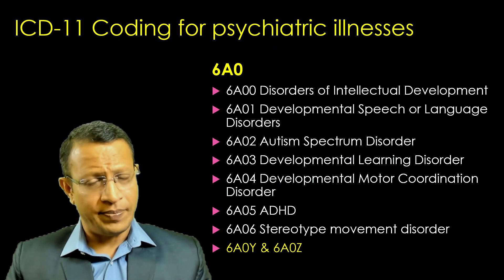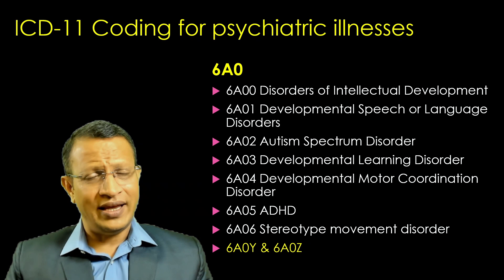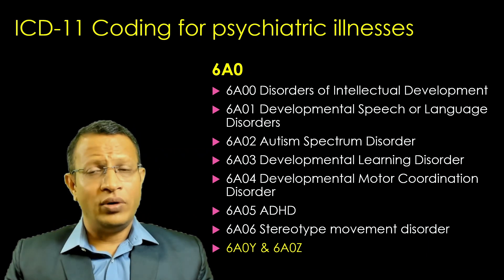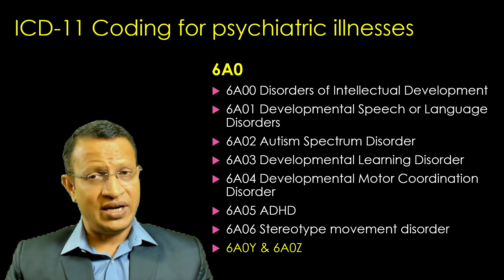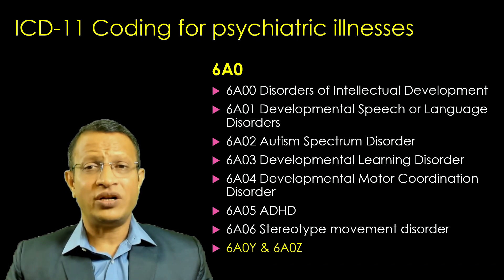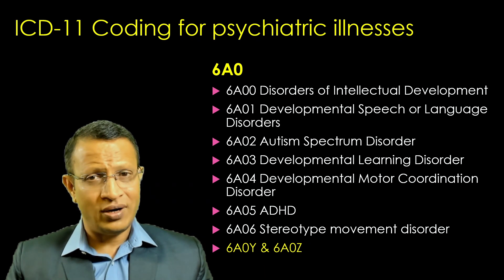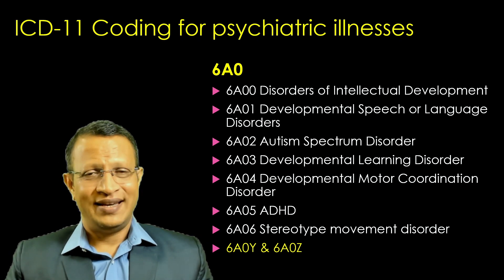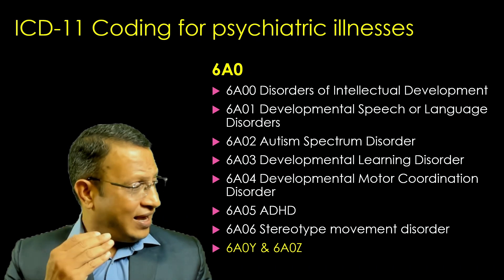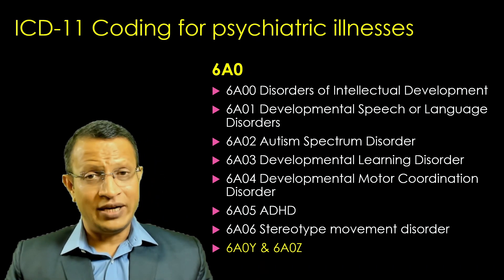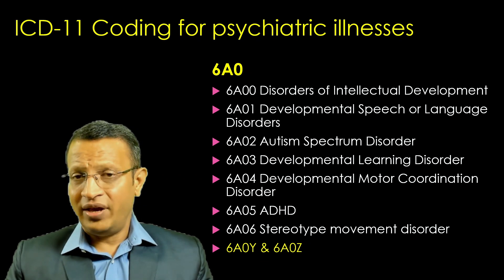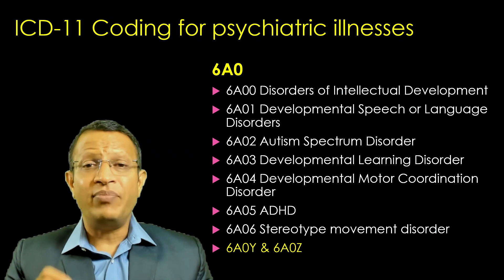Let's move into 6A0, which is neurodevelopmental disorders — given significant importance here. Under 6A0: intellectual developmental disorder, speech and language disorder, 6A02 is autism spectrum disorder, 6A03 is developmental learning disorder, 6A04 is developmental motor coordination disorder, 6A05 is ADHD, and stereotype movement disorder. So 6A is completely for neurodevelopmental disorders, reflecting the importance given to this category in the naming of Mental, Behavioral or Neurodevelopmental Disorders.